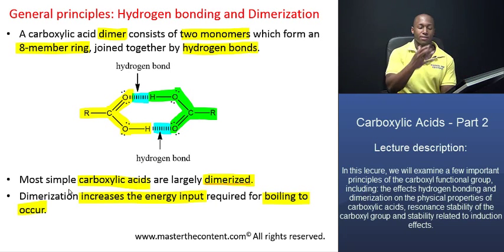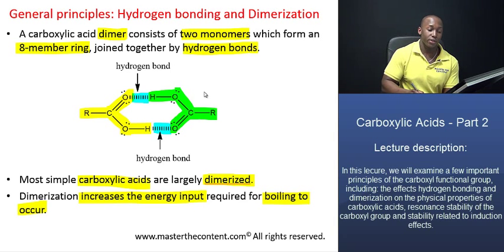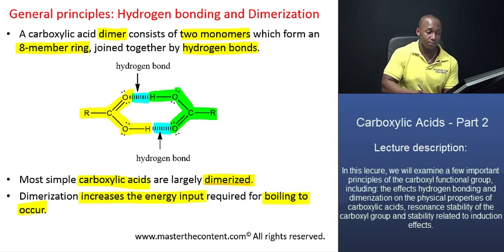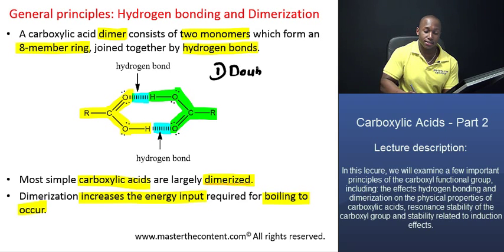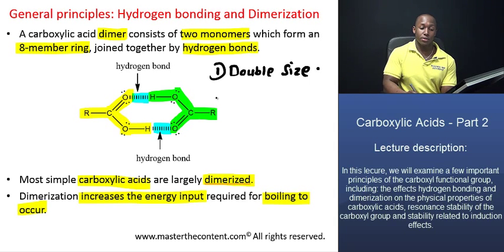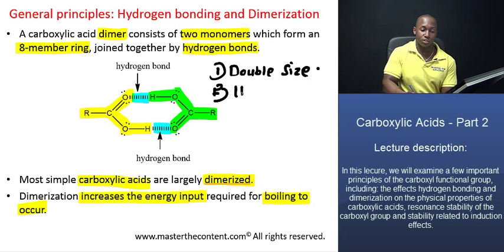How does it do that? It's very simple. When you form a dimer, you do two things: one, you effectively double the size of the molecule, and two, you introduce additional hydrogen bonds. And we all know what those do as far as melting and boiling points are concerned.